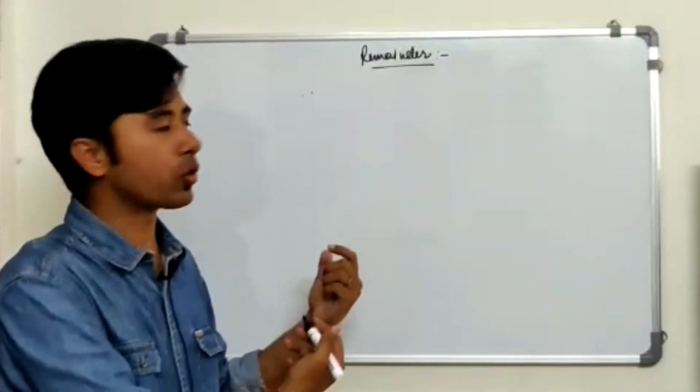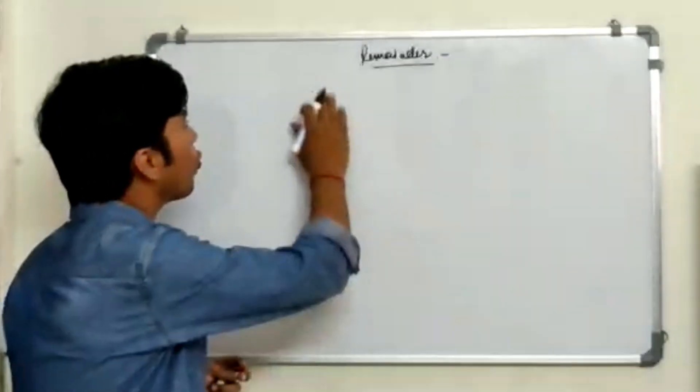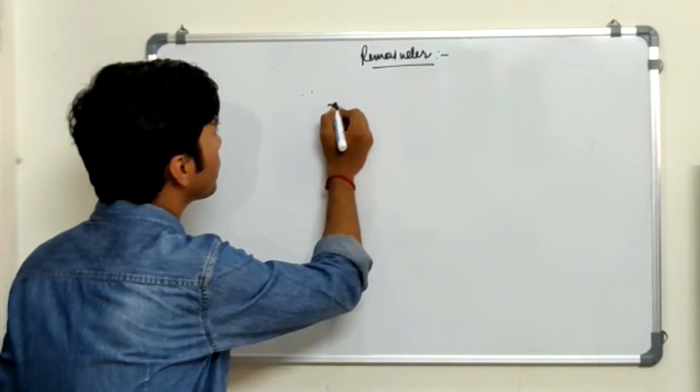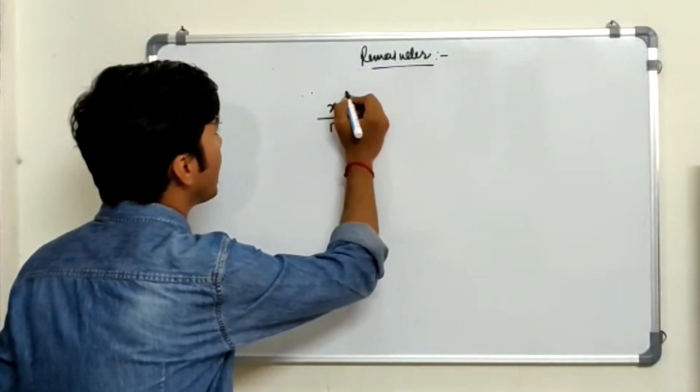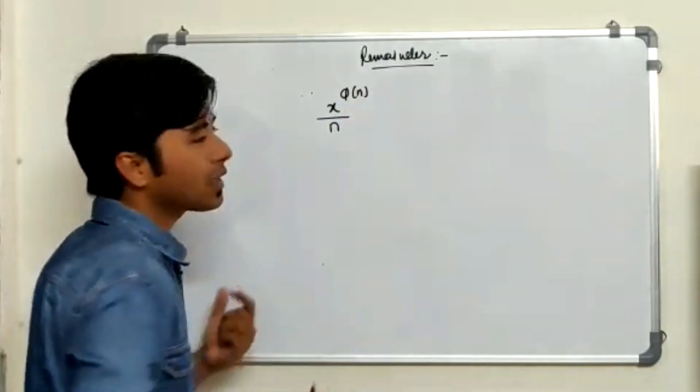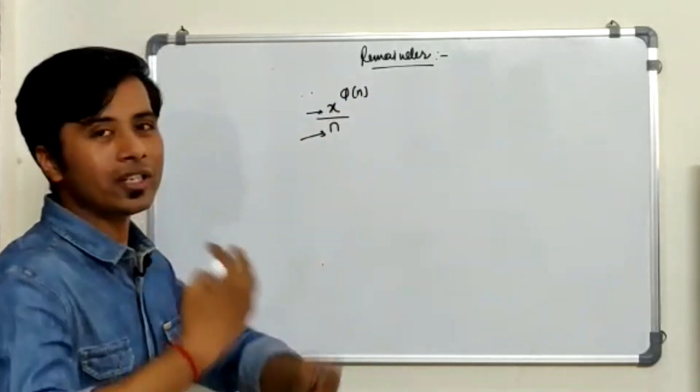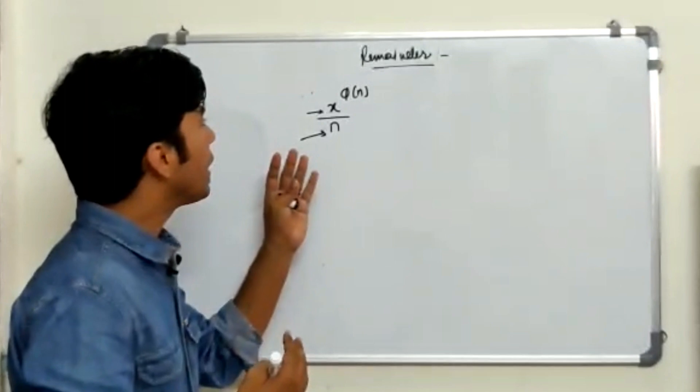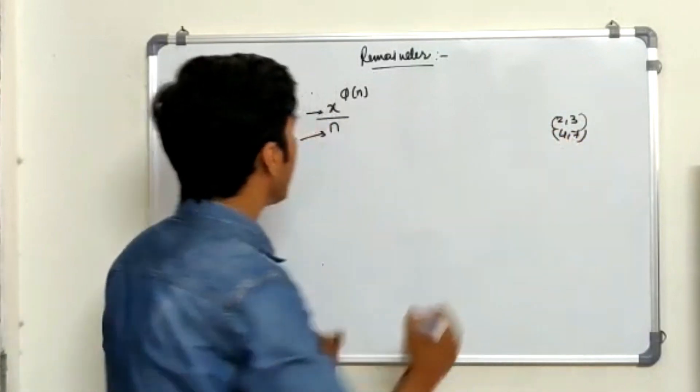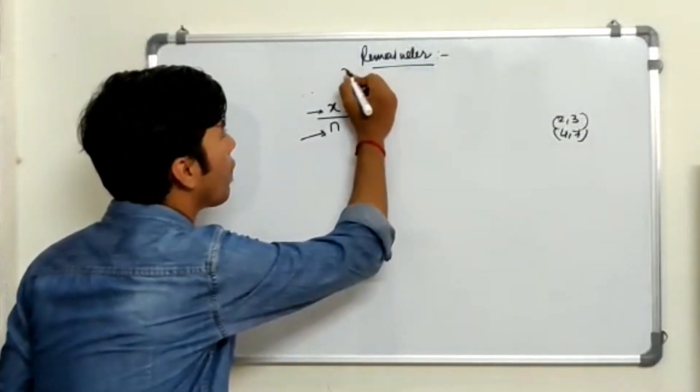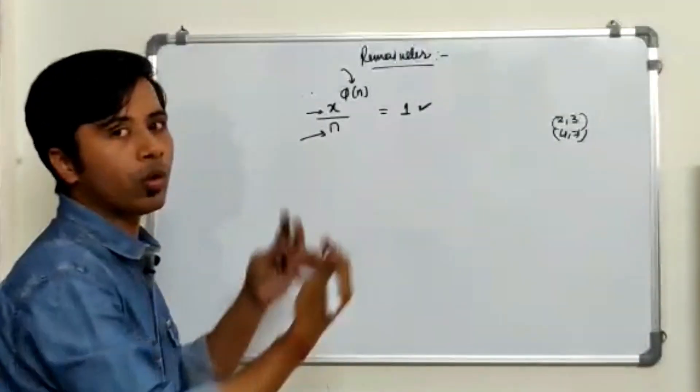Now we have seen totient, how to find the totient basically. Now we will be finding remainder using this Euler's theorem. So guys, let's see how do we proceed on this. So let's say if I have a number x to the power totient of n which is divided by n. So whenever you have this condition where x and n should be coprime to each other. And I hope you guys know what is coprime. So coprime is basically no common multiple between them except 1. Like 2 and 3 are coprime, 4 and 7 are coprime. So if you have x and n as coprime and this power of x is totient of the denominator, your remainder is going to be 1. As simple as that.